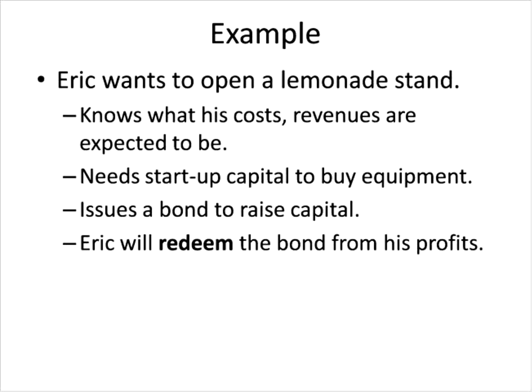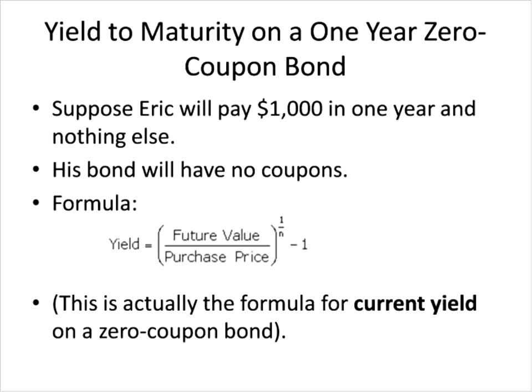Eric is hoping that his profits will cover the cost of borrowing so that it will be no problem for him to pay the bondholder back when it's time to redeem the bond or pay face value. Let's suppose the face value of the bond is $1,000 and there will be no coupon payments — this is what we call a zero coupon bond. Eric will redeem this bond in one year. Zero coupon bonds are typically sold at a discount, meaning the price will be less than the face value, and we can use the formula shown here to calculate yield to maturity.